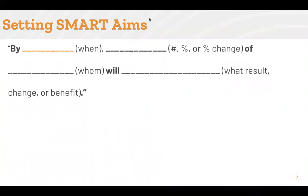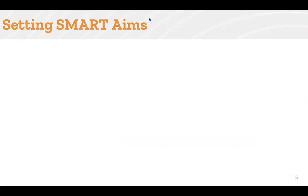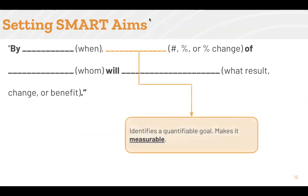Let me break this down for you. The first space, 'when,' creates a time frame by which you should meet your goal — this means your AIM is time-bound. The second space, 'number percent or percent change,' identifies a quantifiable goal — this makes your AIM measurable.